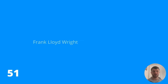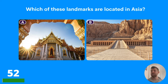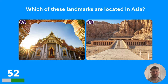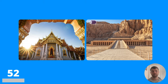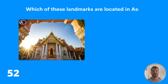Question fifty-two: which of these landmarks are located in Asia? Is it A or B? Take a look at those pictures — which do you think is in Asia? The answer is A.